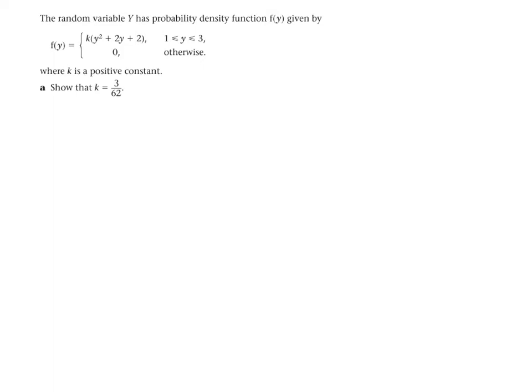I'm going to add a second part to this question. So once we've shown that k is 3 over 62, I would also like to work out the probability that y is greater than 2.